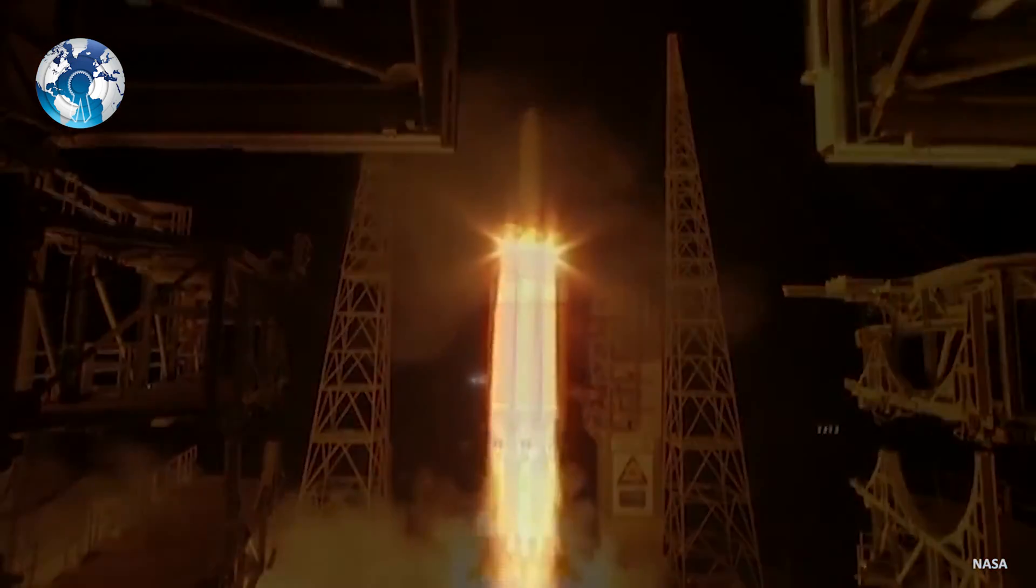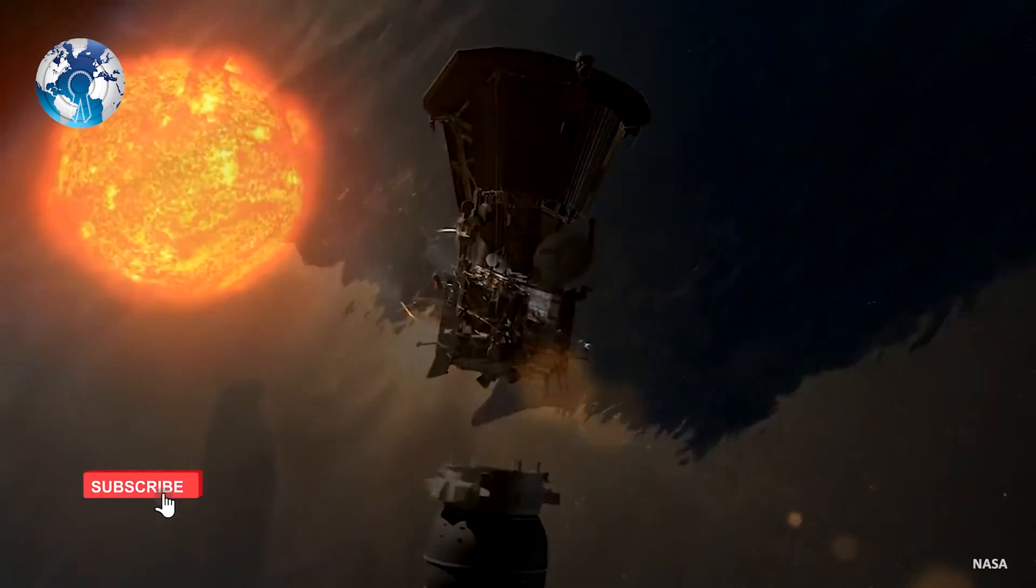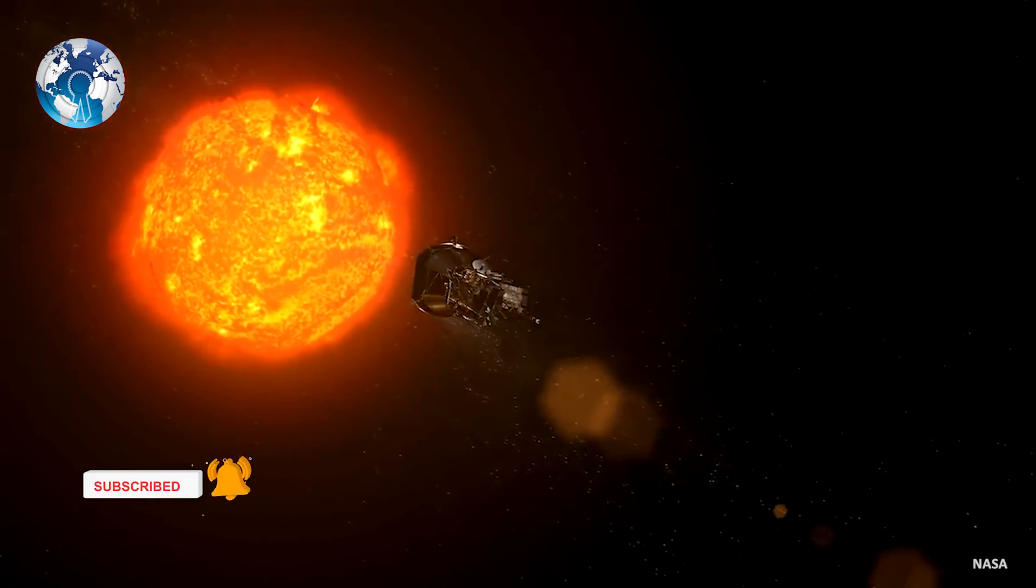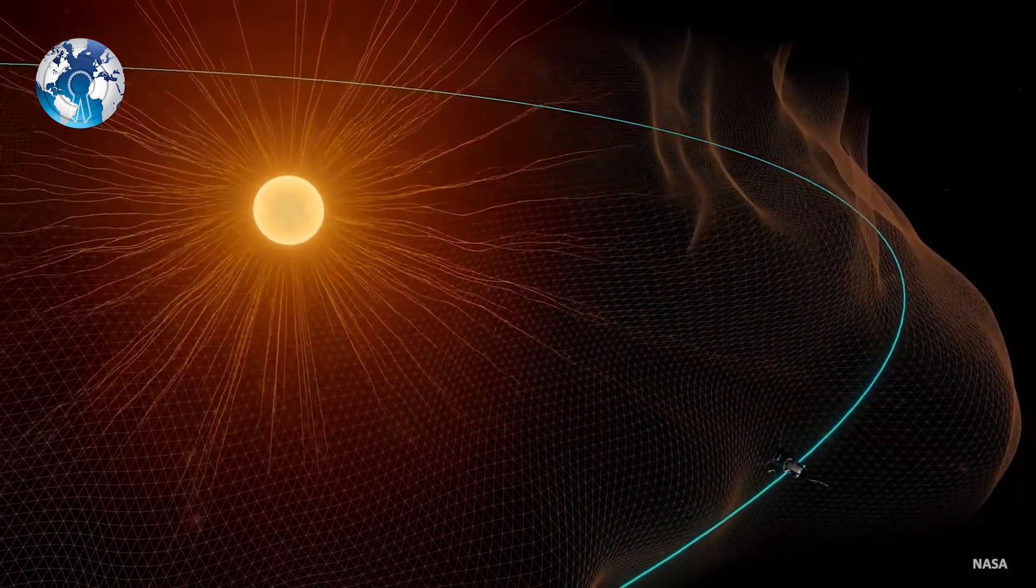Launched in 2018, Parker was 8 million miles or 13 million kilometers from the center of the Sun when it first crossed the jagged, uneven boundary between the solar atmosphere and outgoing solar wind.